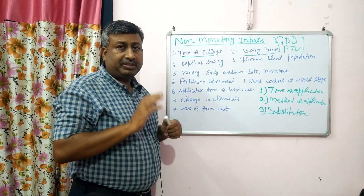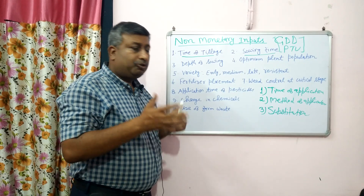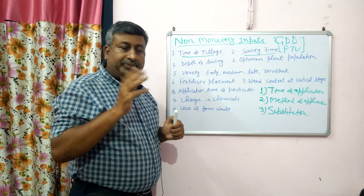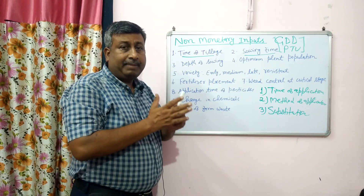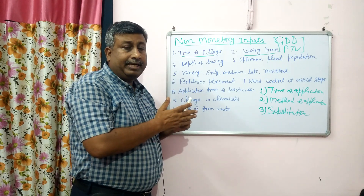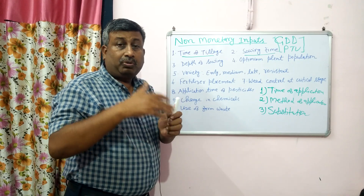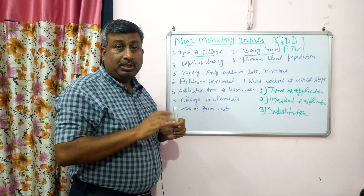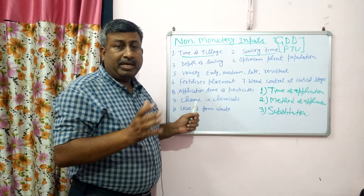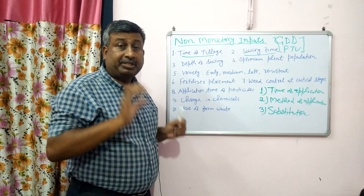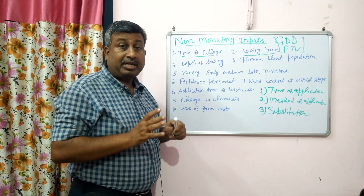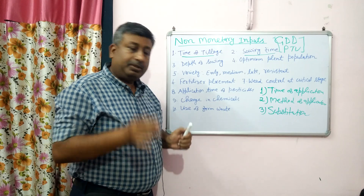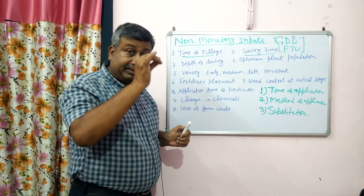If GDD and PTU requirements are not fulfilled, the crop will not mature. If sowing is done at the right time, the crop gets the full temperature and photoperiod requirements during the growing period. There should be a good balance between vegetative and reproductive growth, and that's why time of sowing is a very important non-monetary input — no extra money is involved whether sowing is early, late, or timely, but timely sowing definitely gives higher yield.